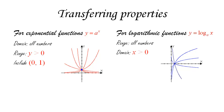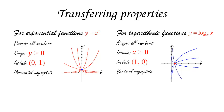All exponential functions go through the point (0, 1). Switching x and y, all logarithmic functions go through the point (1, 0). Also, all exponential functions have a horizontal asymptote — always the x-axis. When we flip things around, all logarithmic functions have a vertical asymptote — the y-axis — either going up or down.